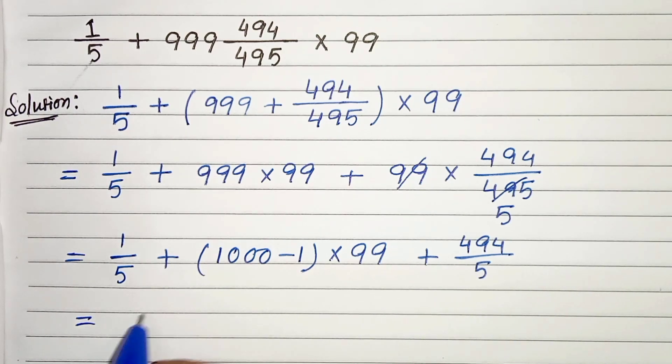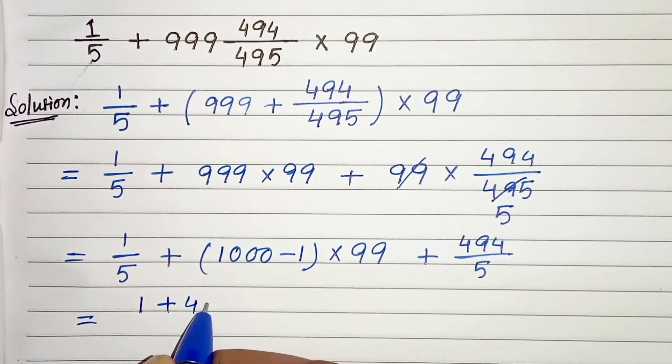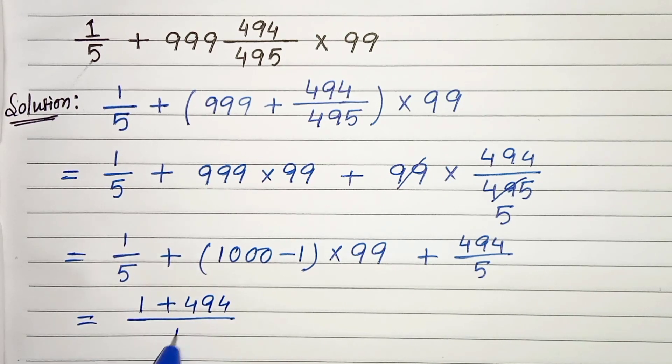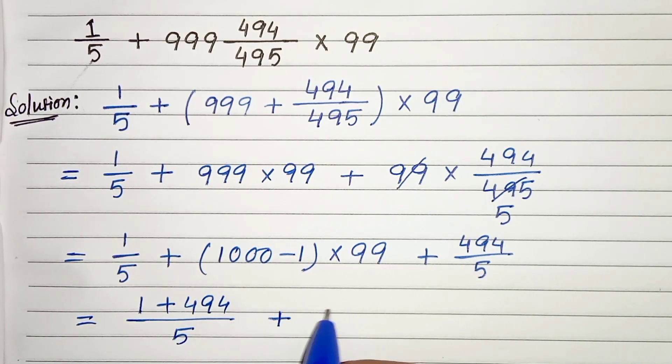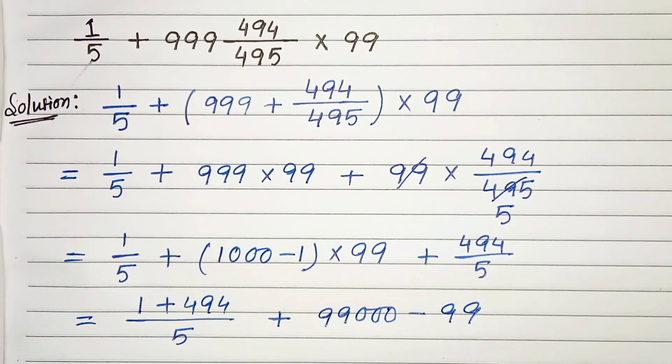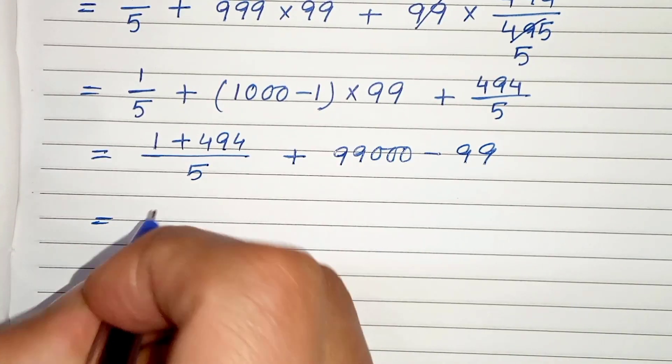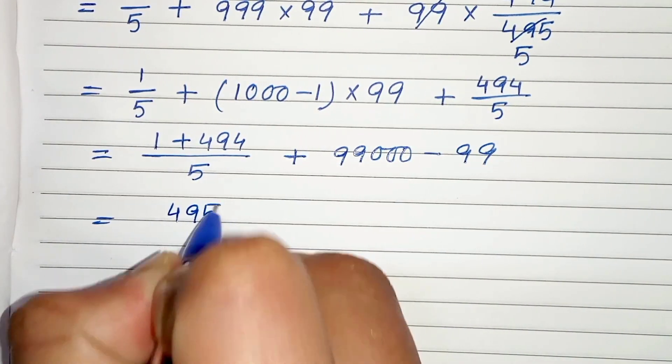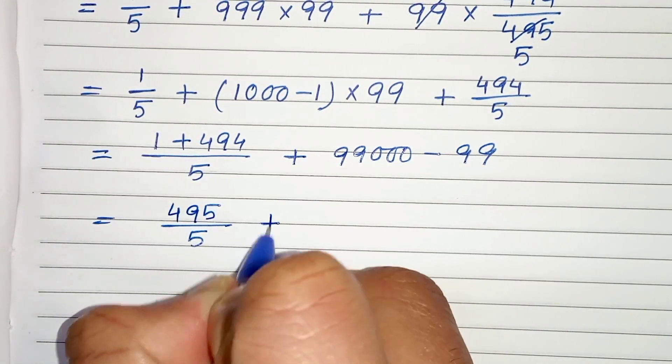So 1/5 plus 494, which is 1 plus 494/5 plus 99 times 1000 is 99,000 minus 99. And 1 plus 494 is 495/5 plus 99,000 minus 99.